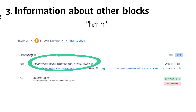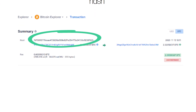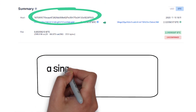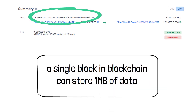Also, note that in this example of Amazon, we are storing just one entry. But in reality, a single block in blockchain can store 1 MB of data. And that's why, depending on the size of the transaction, a single block can store a few thousand transactions under one roof.